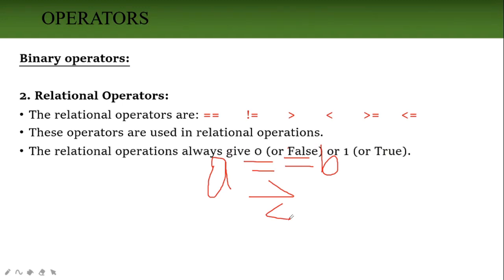When we perform relational operations, the result is always 0 or 1 — that is, true or false. For example, checking 'a == b': if a is equal to b, the value will be 1 (true); if not equal, the value will be 0 (false).